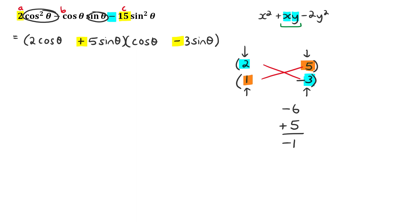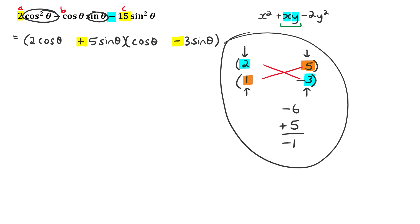If you distribute that bracket out you will get 2cos²θ - cosθsinθ - 15sin²θ. That was a short video on how to factorize with trigonometry. If this is giving you difficulty, please go and look at a grade 10 textbook to revise factorization, because in this video I moved quickly without covering all the intricacies. The point was simply to show that it works exactly the same with sine and cos as it would with x and y.